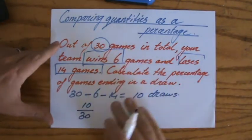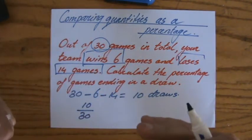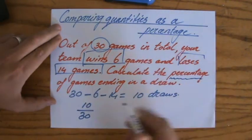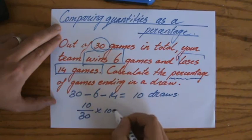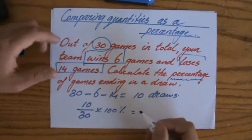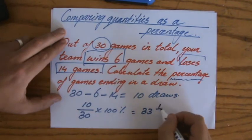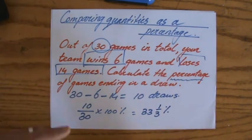And they do not ask me to give it as a fraction, they don't ask me to give it as a decimal. They want me to give it as a percentage, so I multiply that by 100%. Alright, and then your answer will be 33 and a third percent. So 1 out of 3 games you are going to draw.